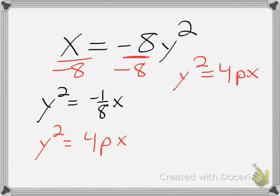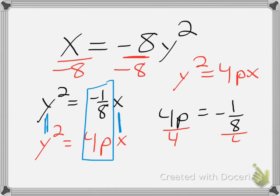And that allows me to write my general equation underneath. And again, I can match up my terms. My y squareds match up, my x's match up, which means I can make a relationship from the 4p and the negative 1 eighth. Then, to solve for p, I'll divide by 4, which gives me p is equal to negative 1 over 32.